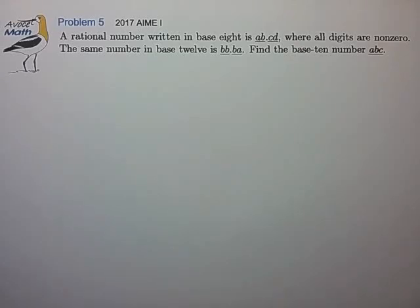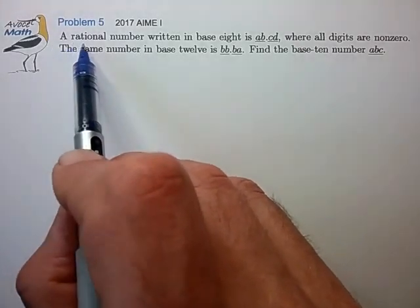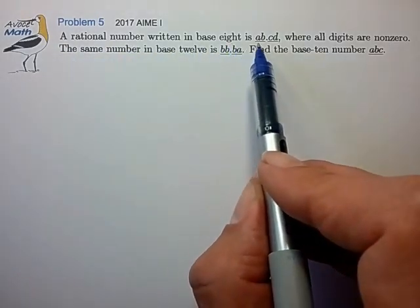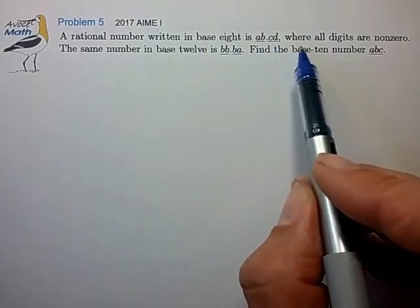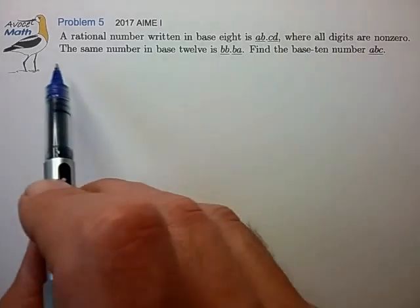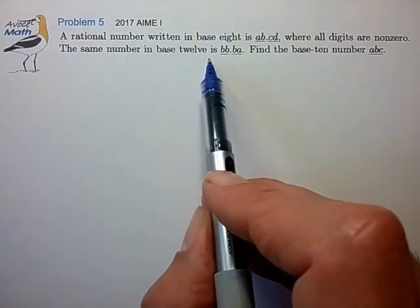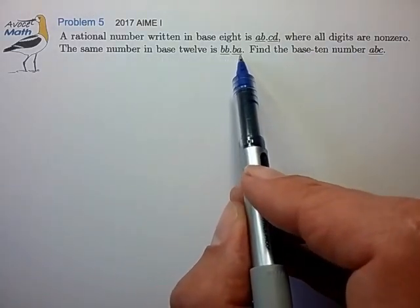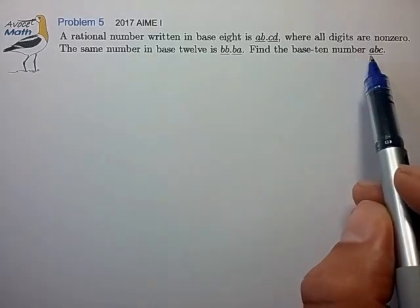Hi, this is problem 5 from the 2017 AIME. A rational number written in base 8 is AB.CD, where all digits are nonzero, and the same number in base 12 is written as BB.BA. Find the base-10 number ABC.